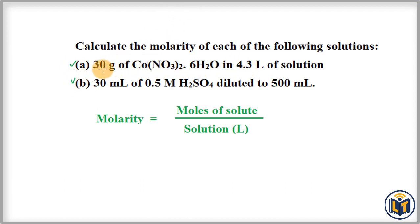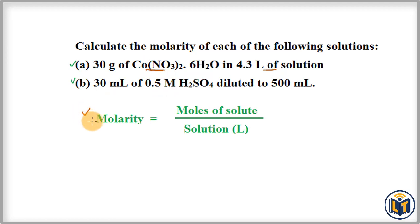In the first part, 30 grams of cobalt nitrate with six moles of water is dissolved in 4.3 liters of solution. The mass of the solute and the volume of the solution are given. The molarity formula is: molarity equals moles of solute divided by volume of solution in liters.